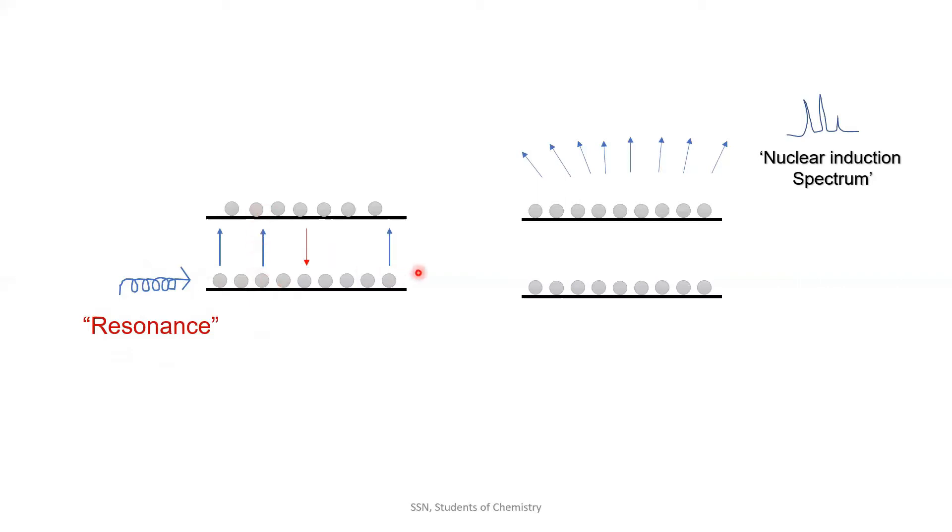After that, a saturation point will be reached from which if we evolve the absorbed energy, it comes back to the thermal equilibrium. The energy can be evolved by relaxation processes and the evolved energy can be analyzed to give a nuclear induction spectrum.